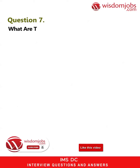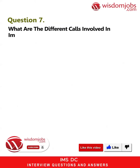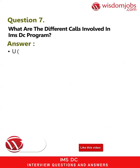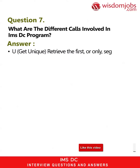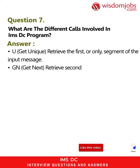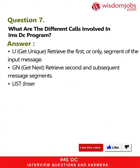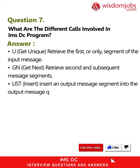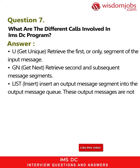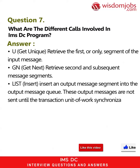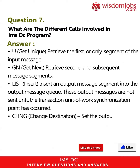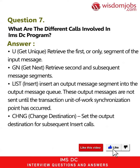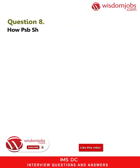Database processing means that the retrieval of a database segment is immediately followed by its update. Question 7: What are the different calls involved in an IMS DC program? Answer: GU (Get Unique) — retrieve the first or only segment of the input message. GN (Get Next) — retrieve second and subsequent message segments. ISRT (Insert) — insert an output message segment into the output message queue. These output messages are not sent until the transaction unit of work synchronization point has occurred.